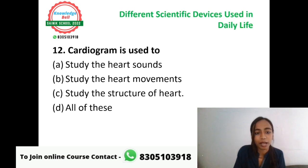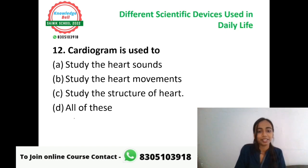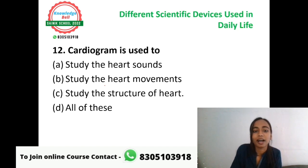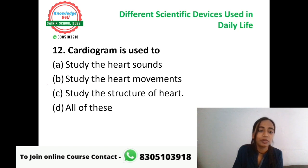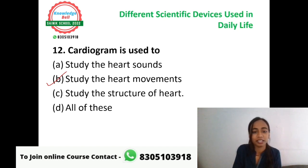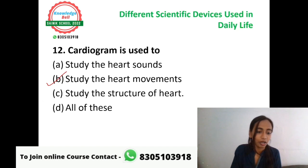Question number twelve: cardiogram is used to — A: study the heart sounds, B: study the heart movements, C: study the structure of heart, or D: all of these. Students often confuse cardiogram with stethoscope since both are heart-related. The trick: stethoscope starts with S, and so does 'sounds' — so stethoscope is for heart sounds and heart rate. Cardiogram does not study heart structure. Cardiogram is used by doctors only to study heart movements. Option B is the correct answer.